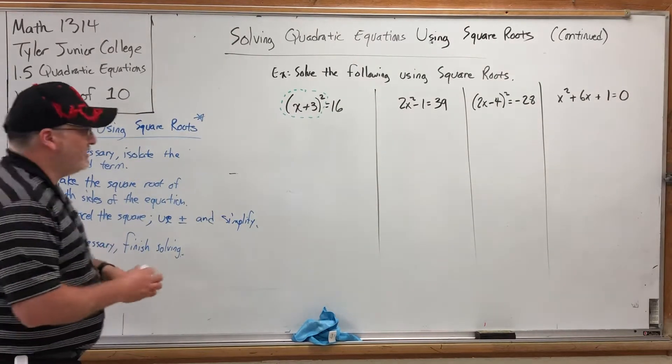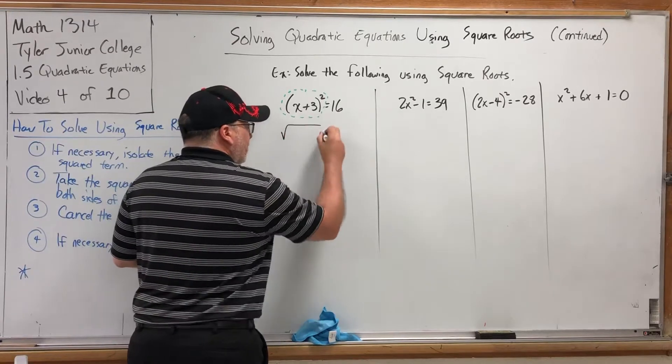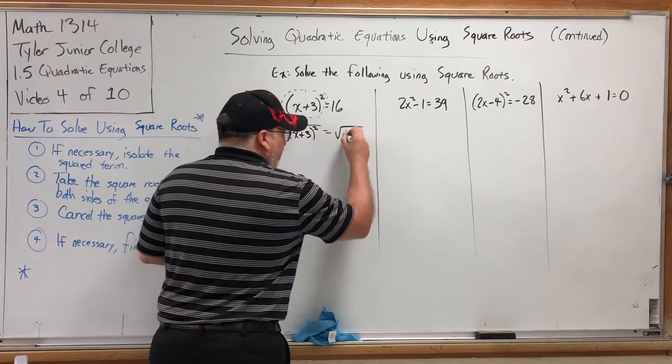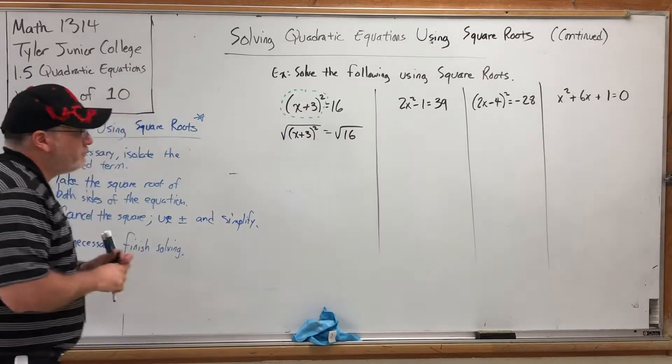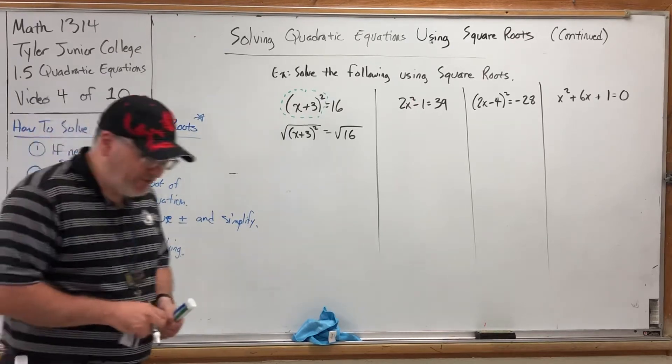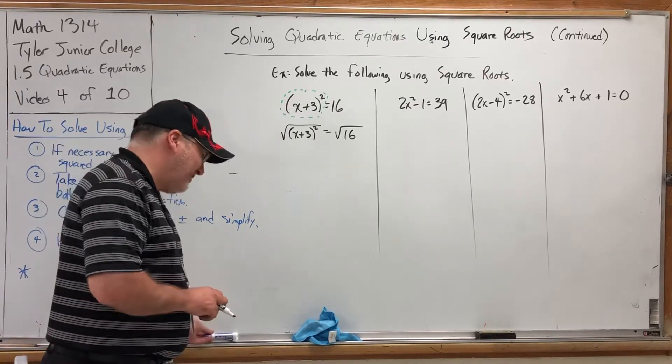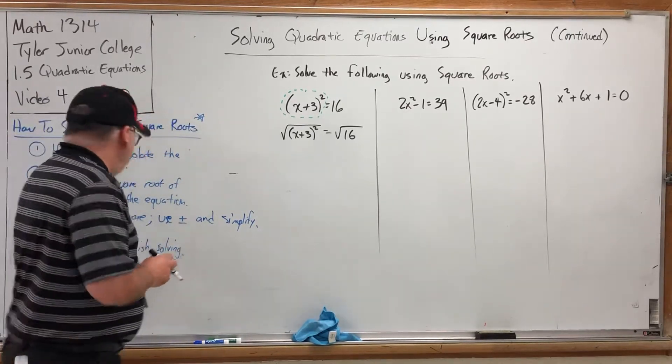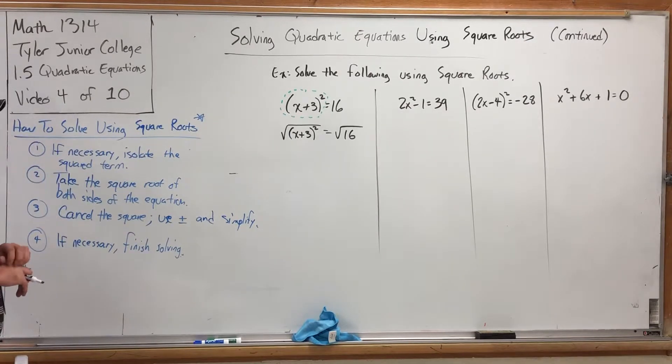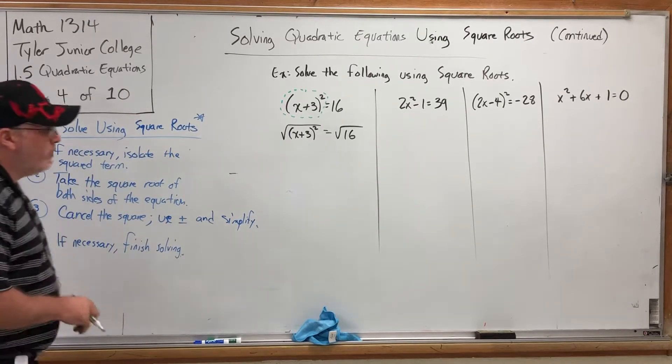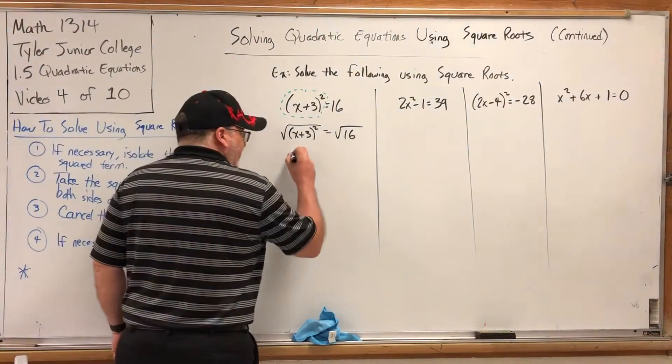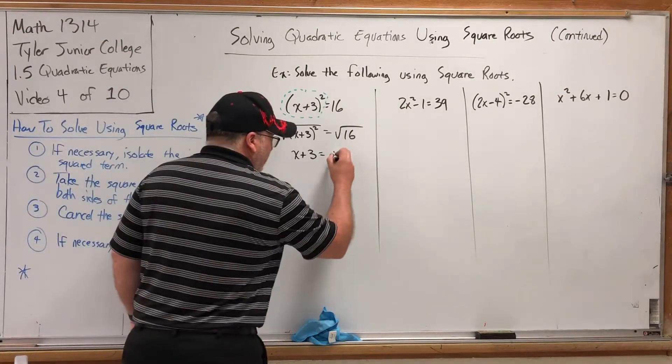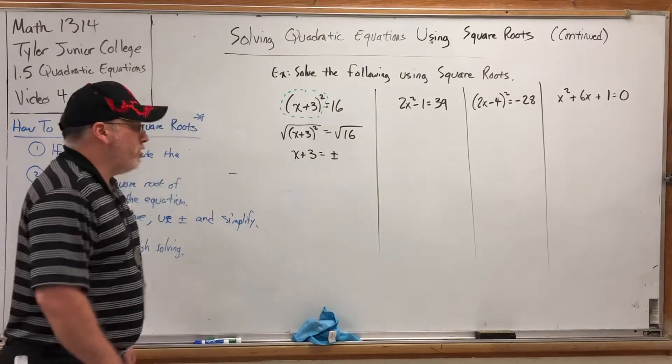So I can move to the second step, which is to square root both sides. So the square root of quantity x+3 squared is equal to the square root of 16. And as a consequence, two things happen. Number one, we cancel the square, so that leaves x+3. And number two, on the other side, we use a plus-minus, and simplify. So plus-minus, and the square root of 16 is 4.